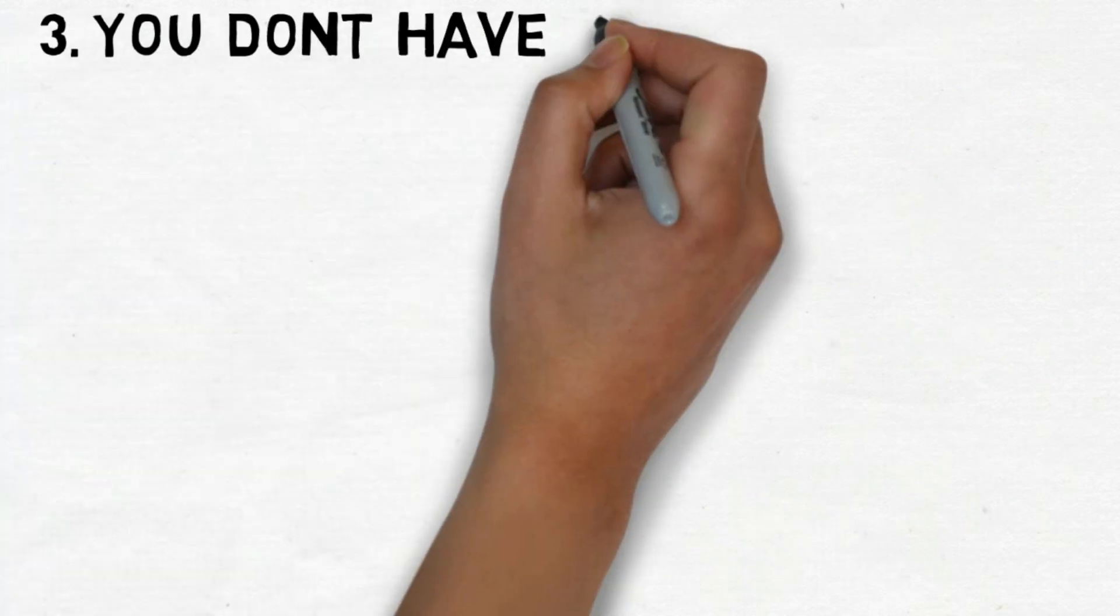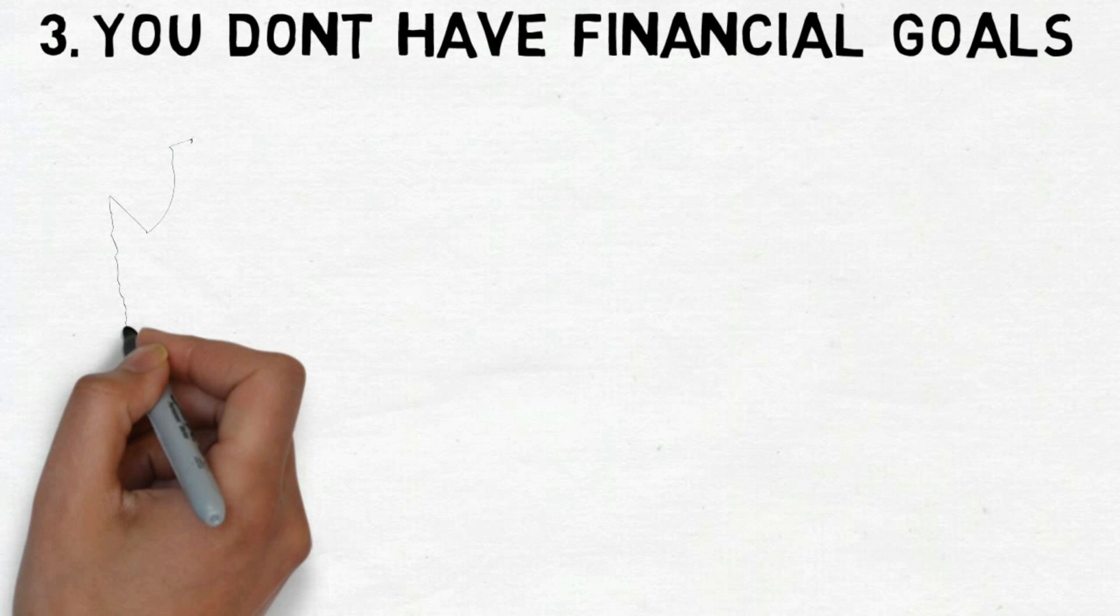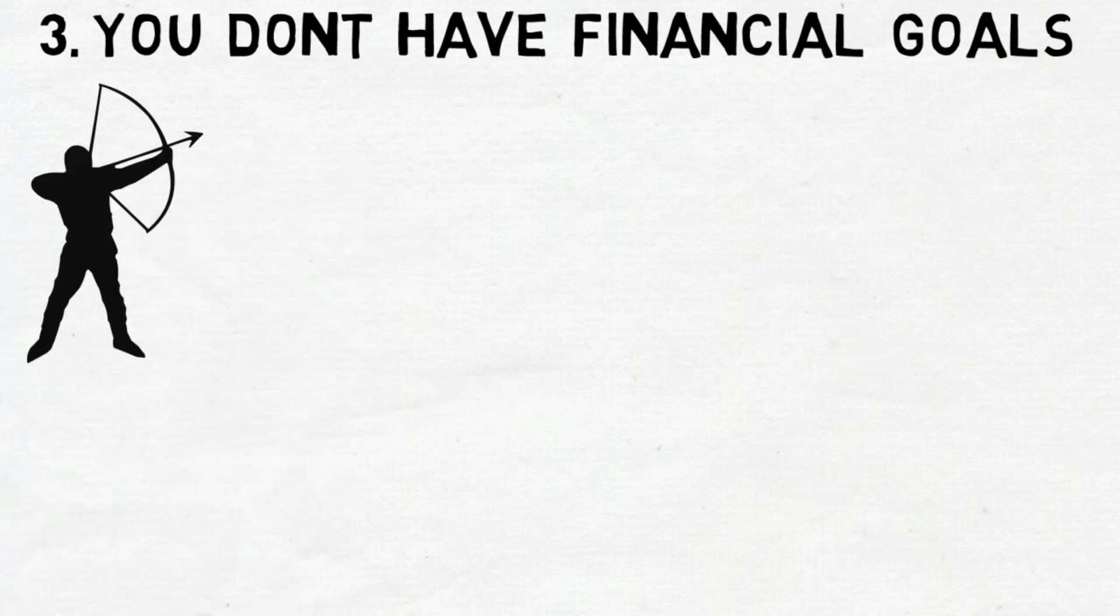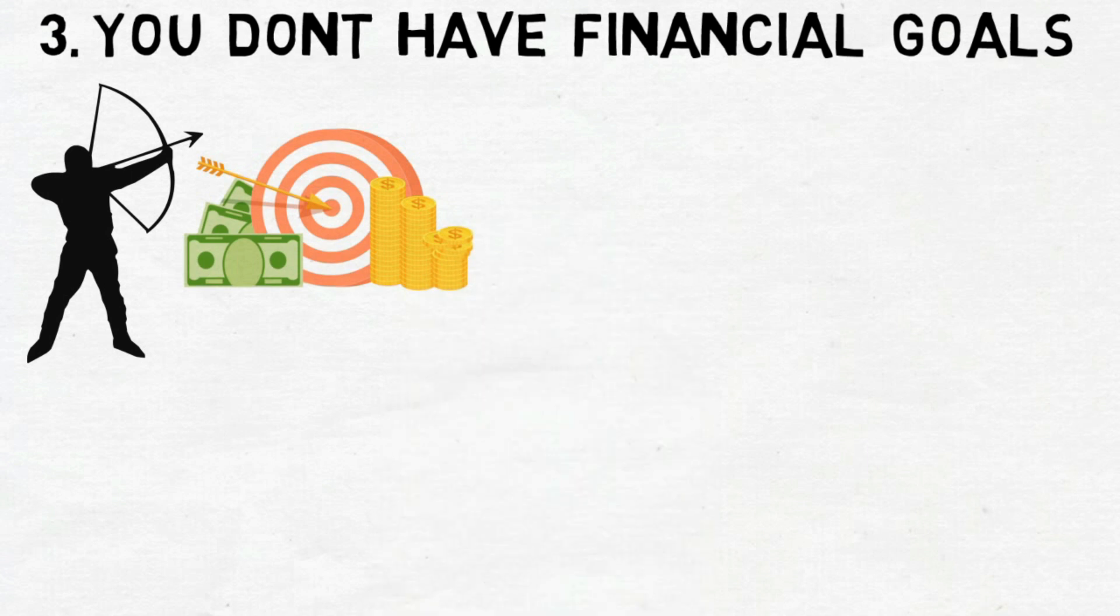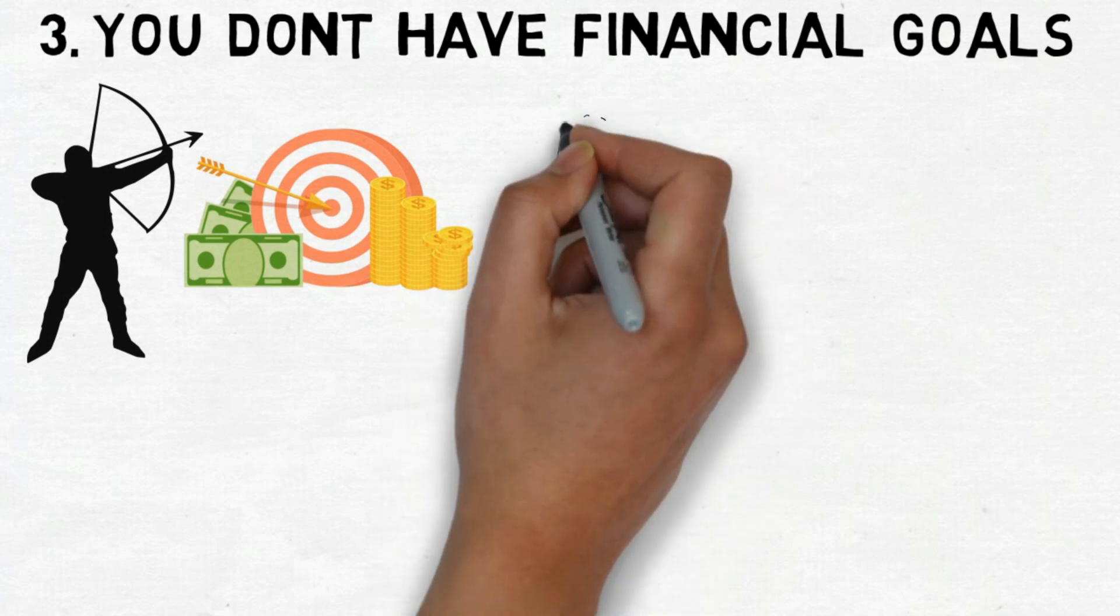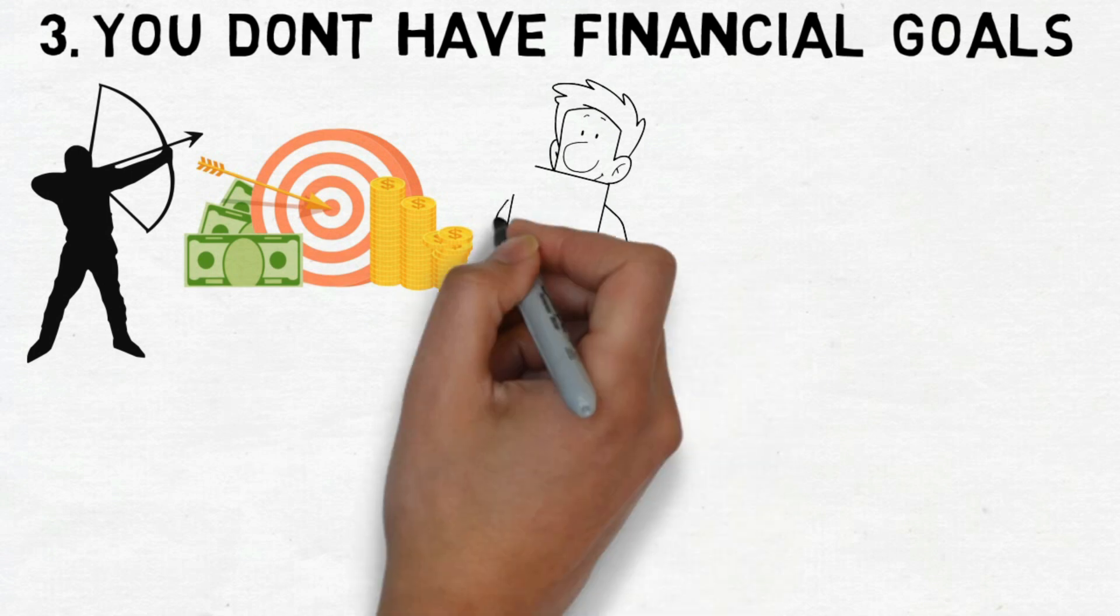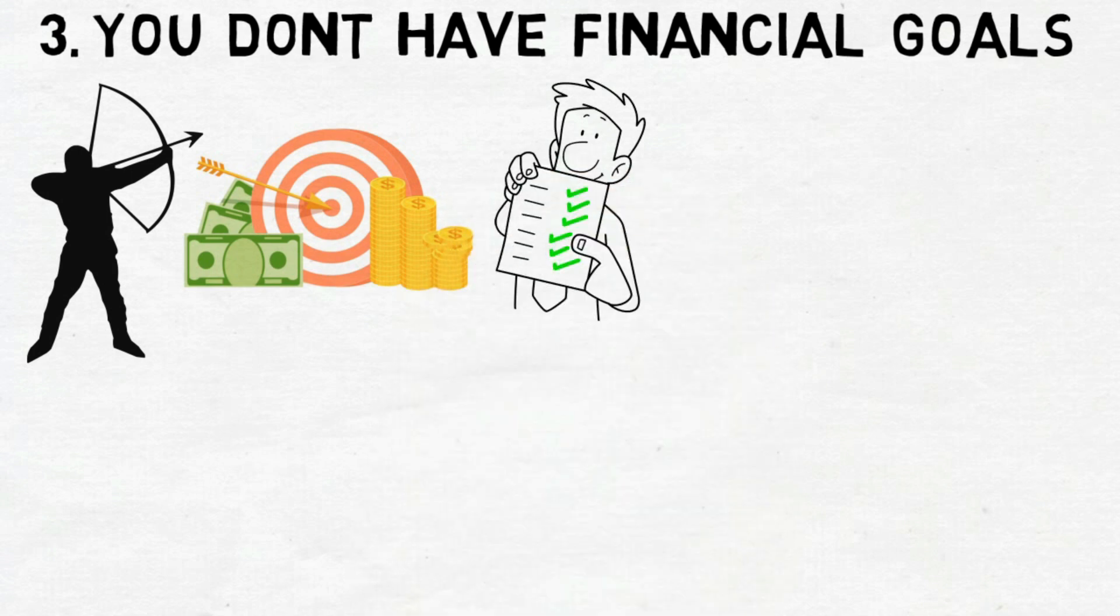Number 3. You Don't Have Financial Goals. Just like trying to hit an invisible target is nearly impossible, not having clear money goals makes it harder to get rich. When embarking on the journey to substantial financial growth, having well-defined goals proves advantageous, simplifying the process as you chart a financial roadmap.